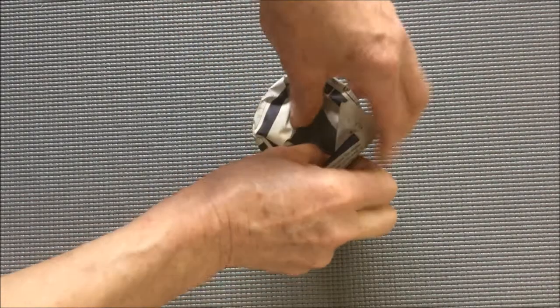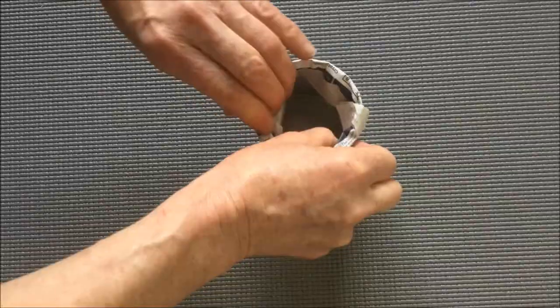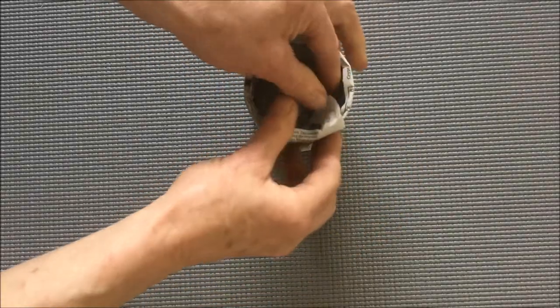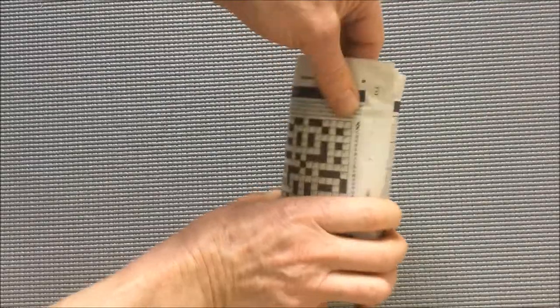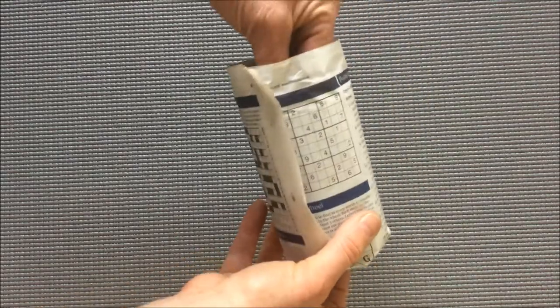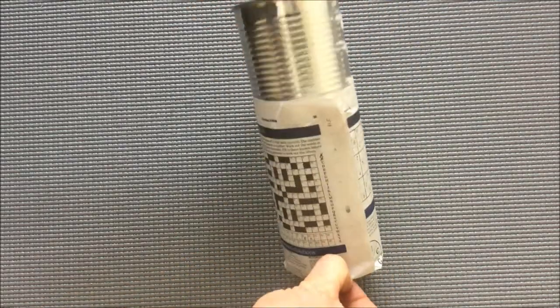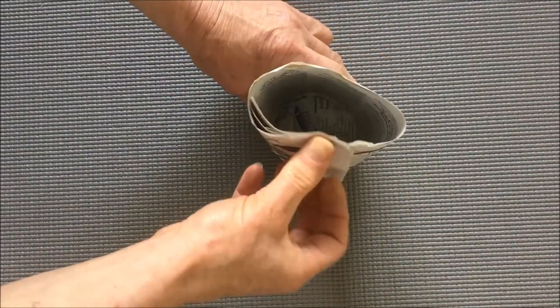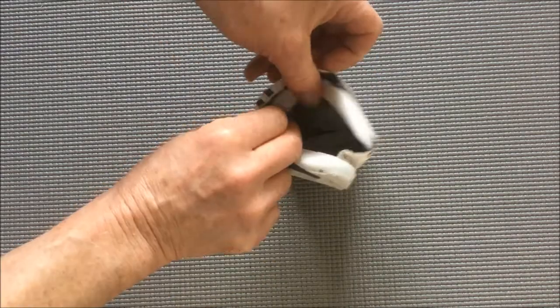Again use the mould as a guide to turn the top edge over and this helps when it comes to folding. Open that back out again and then slide off the mould and then fold over using that crease as a guide.